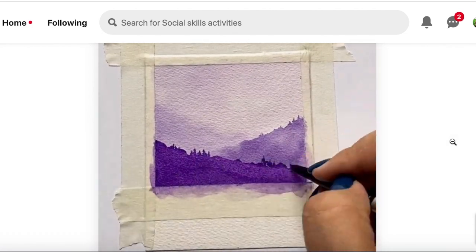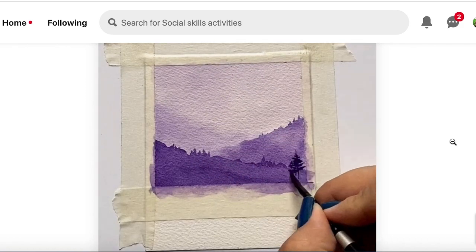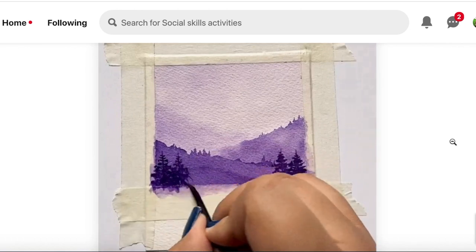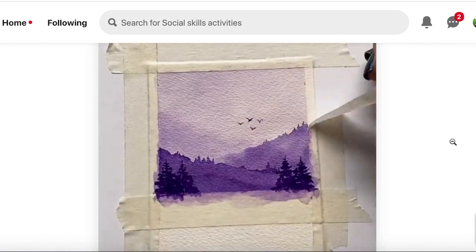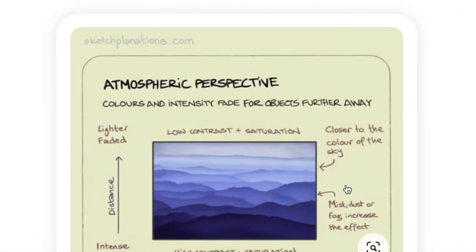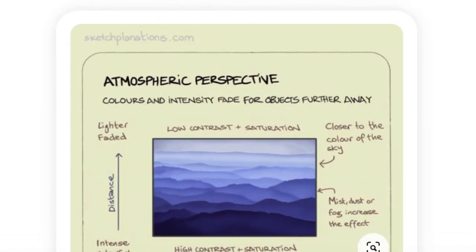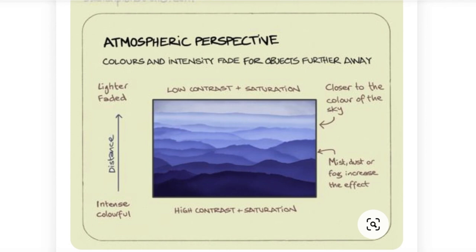Do you notice how this artist is using only one color and changing the amount of water used to make the colors lighter and darker? It also really looks like it's going back in space — that's called atmospheric perspective. Colors and intensity fade as objects get further away. We can observe atmospheric perspective in real life; it's science. Artists recreate that science to create the illusion of space. They even add mist or dust or fog to increase the effect. Things that are closer to us look darker, and as they get further away they get misty and lighter — desaturated.